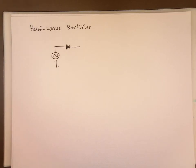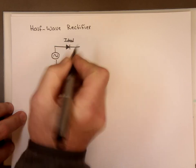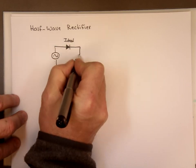Half-wave rectifier. Let's take an AC source, attach to it an ideal diode. We'll call this ideal one. And let's put our load resistor here R sub L.